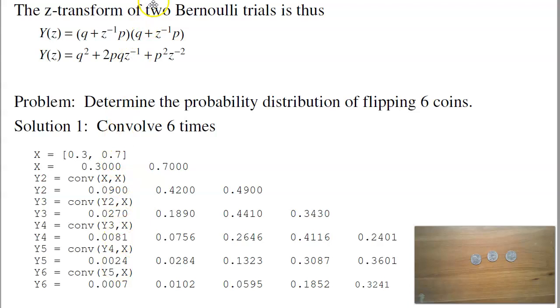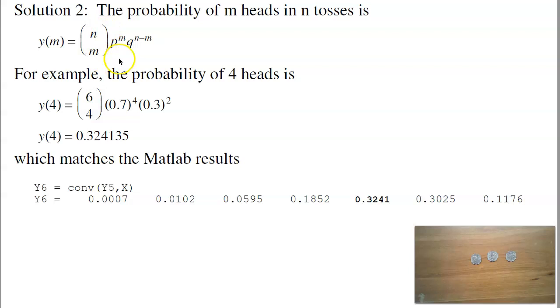A second way of doing it is using the definition of the probability of the polynomials. For example, if I want to get four heads in six tosses, that's six choose four. Six coins, four of them would be heads. The probability of heads is 0.7, I've got four of them. The probability of tails is 0.3, I've got two of them. It gives me a 32% chance of getting four heads out of six. Going back to the previous chart, one, two, three, zero, one, two, three, four. 32% chance of getting four heads that matches up. Either way works.